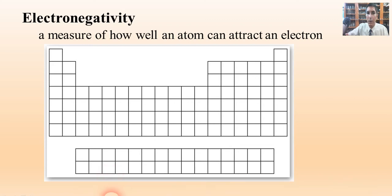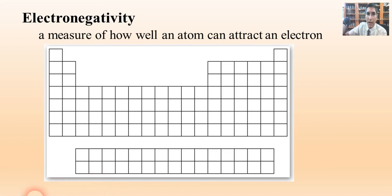Hi there, I'm Jeremy Krug and welcome to my AP Chemistry course. In this video we're looking at some more periodic trends, and the first one we're going to look at is called electronegativity.